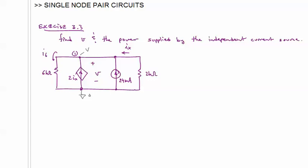We now want to look at single-node pair circuits. So these are circuits that have just two nodes. And when we have two nodes, or n nodes in a circuit, we only solve for n minus one of those nodes, because one of the nodes has to be designated as the reference node.